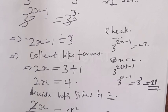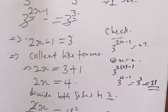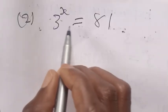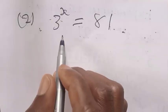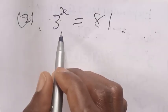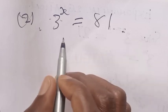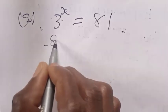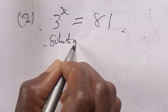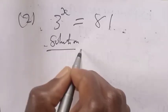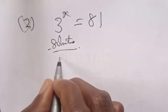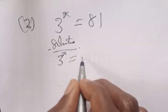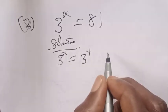Question number 2 says 3 raised to power s is equal to 81. This is also an exponential equation. For the solution, we express 81 as 3 raised to power 4, so 3 raised to power s is equal to 3 raised to power 4.